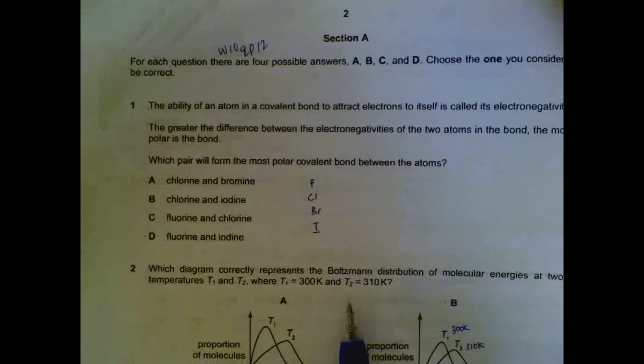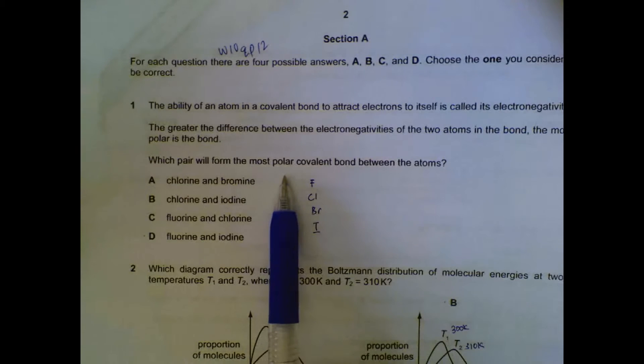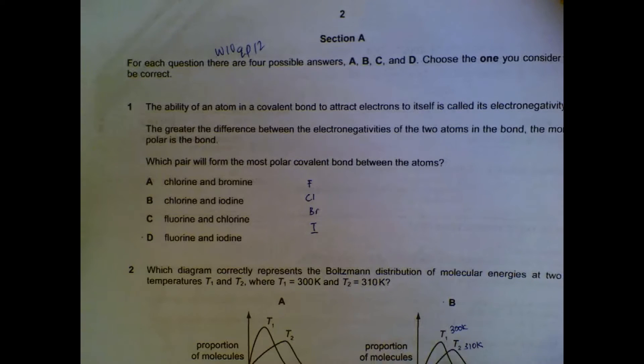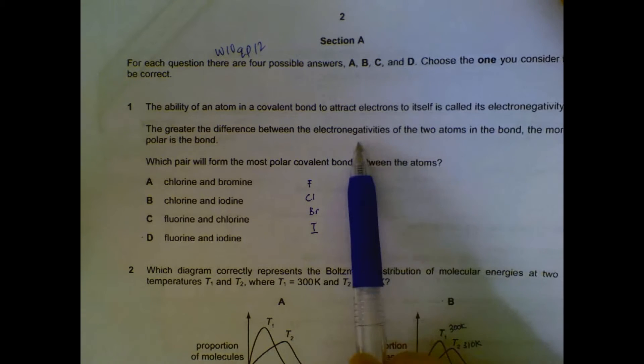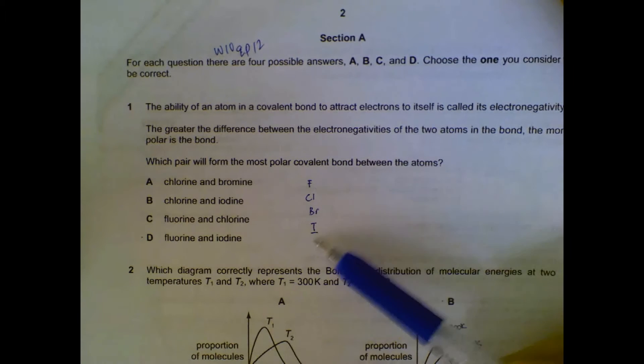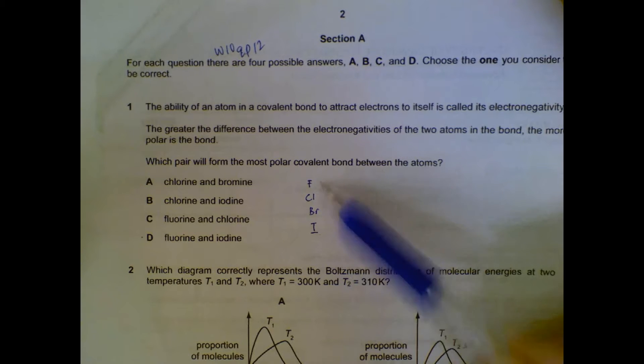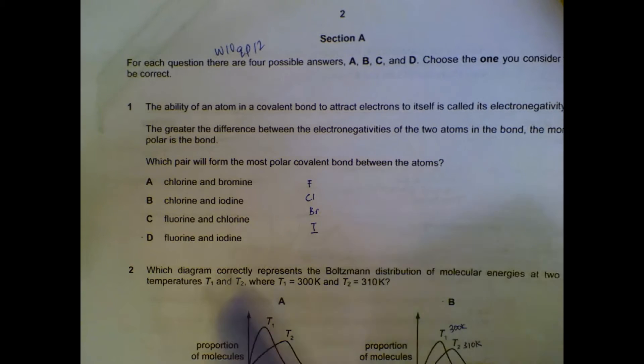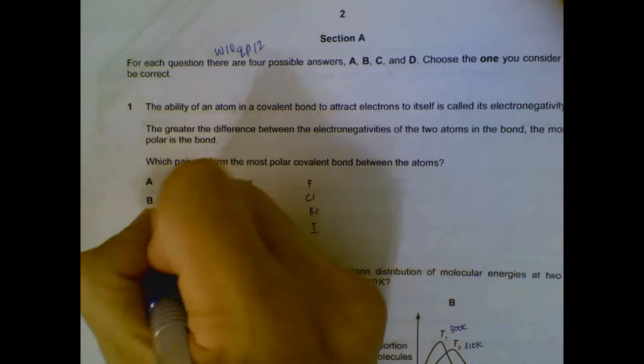Number one: which pair will form the most polar covalent bonds? The most polar bonds will be formed when they have the greatest difference in electronegativity. Comparing the halogens, the most electronegative is fluorine and the least electronegative is iodine, so a pairing between fluorine and iodine will be the most polar bond.